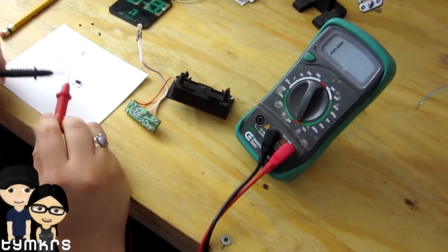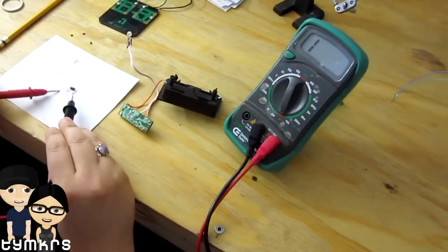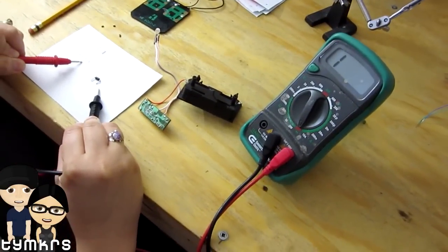So essentially, you know that if your red is on a particular lead, and your black is on another lead, and you get results, then you can draw your diode that direction.